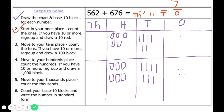Step three: move to your tens place. Count the tens — if you have ten or more, regroup and draw a hundreds block. We count and find thirteen tens. Thirteen is more than ten, so we are going to regroup. Ten tens is the same as one hundred, so we regroup and draw another hundreds block in our hundreds column. Those ten tens are no longer part of the tens group — they have been regrouped to one hundred — which means we are left with three tens.